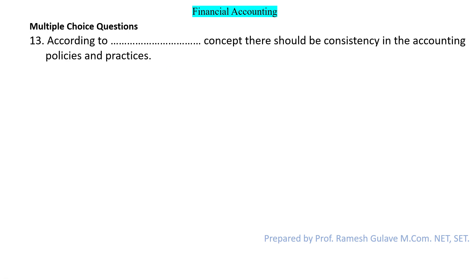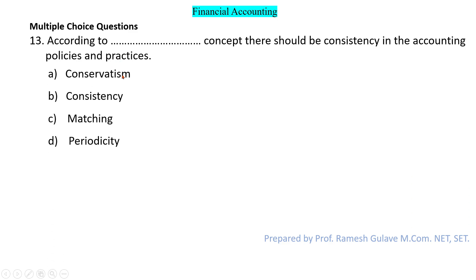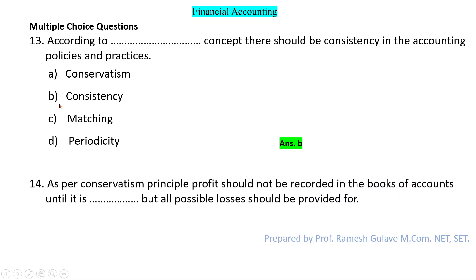The next question says: according to dash concept, there should be consistency in the accounting policies and practices. This is the consistency concept, which says there should be consistency in the accounting policies and practices followed by a company. So the answer is option B.